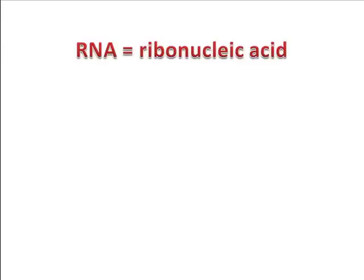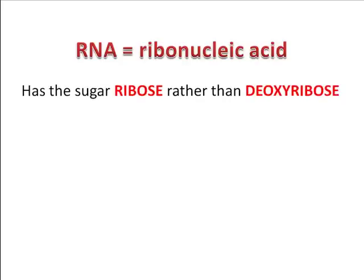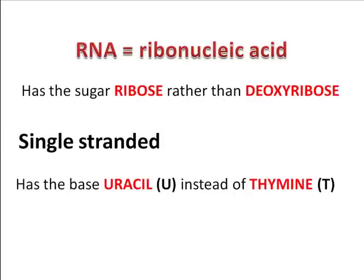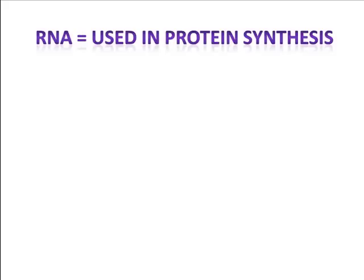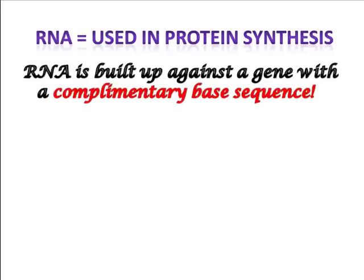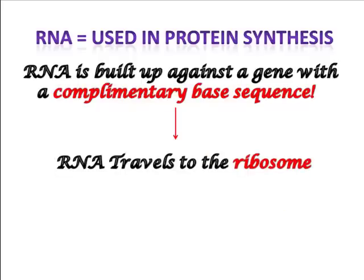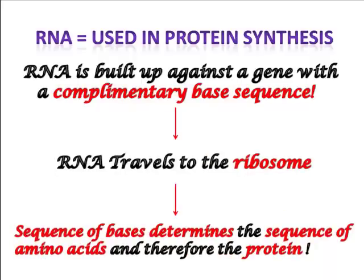RNA is short for ribonucleic acid, another polynucleotide found in a cell. RNA molecules are made up of the sugar ribose rather than deoxyribose. They are mainly single-stranded, and instead of having the base thymine, they have uracil. RNA is used in protein synthesis. An RNA strand is built up against a gene with a complementary base sequence, then travels from the nucleus to the ribosome. The sequence of bases on the RNA molecule is used to determine the sequence of amino acids, and therefore the protein that's being made.